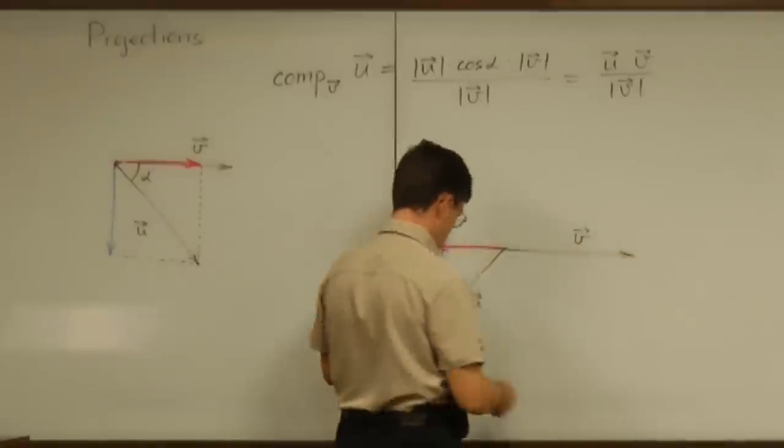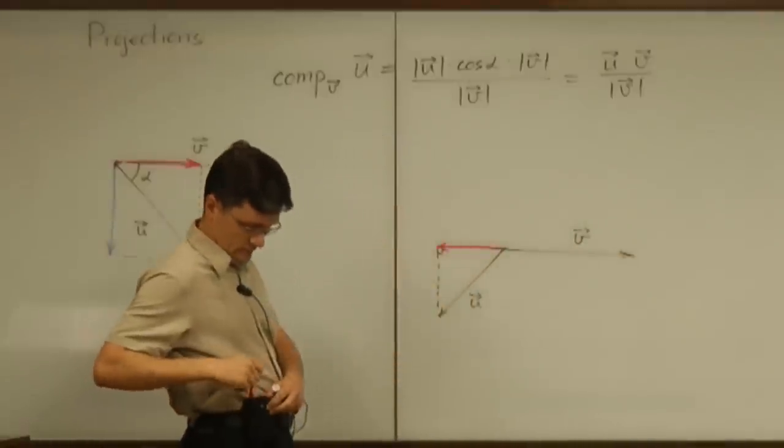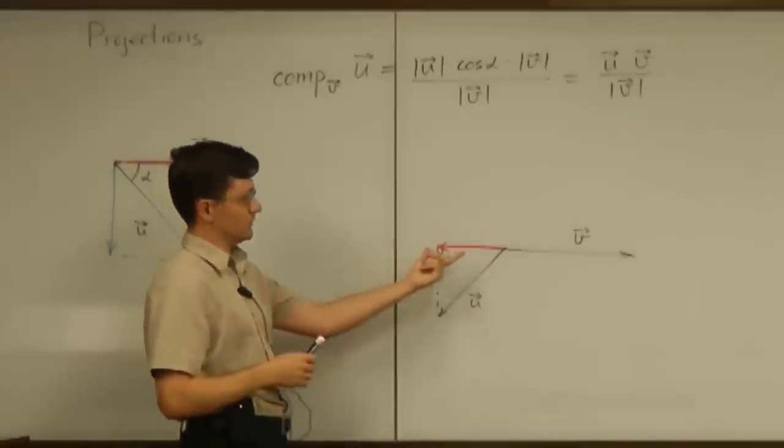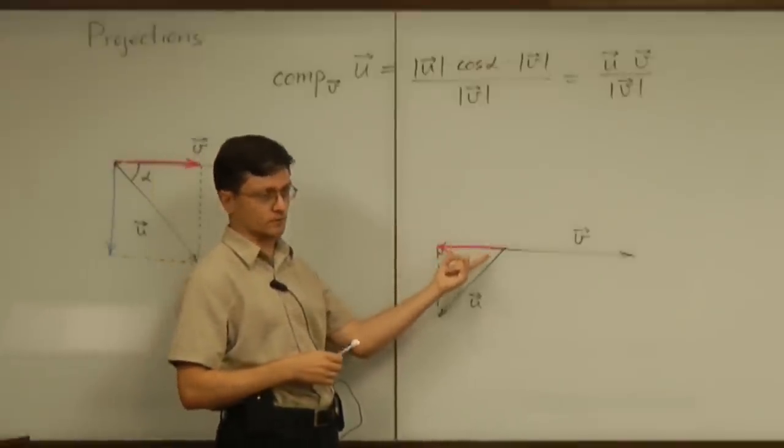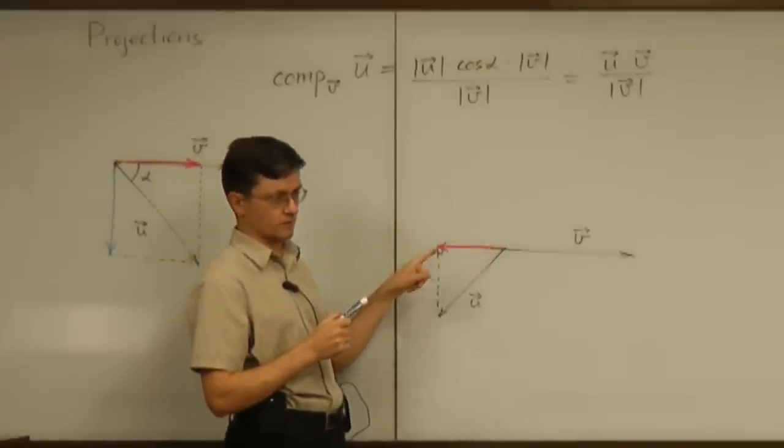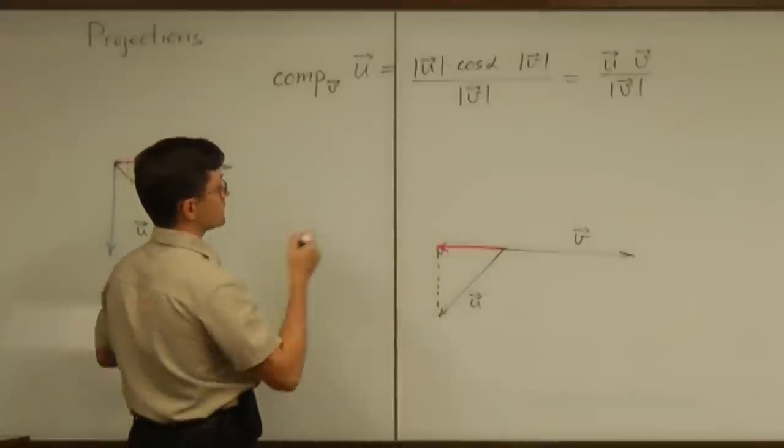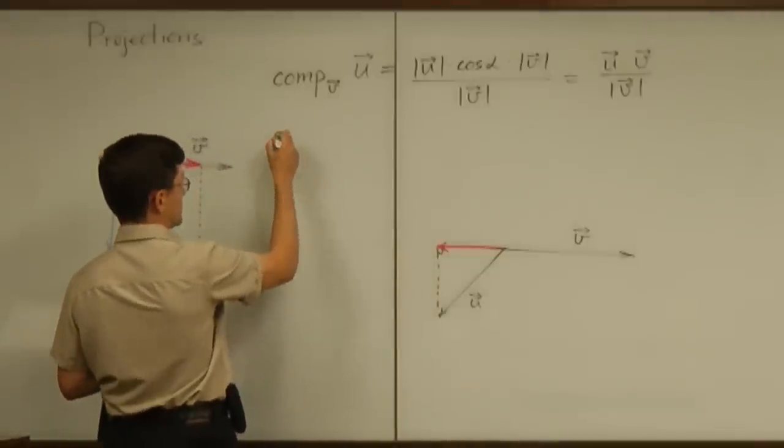For some technical reasons, we sometimes need to know not only the magnitude of that vector, but also the vector itself, that red vector as a vector. And to do that, we introduce notation.